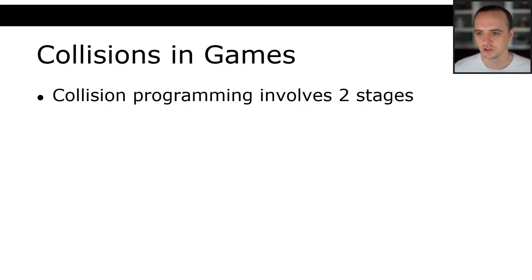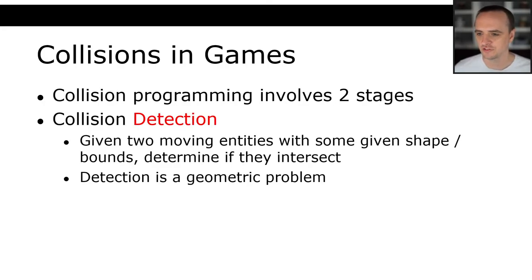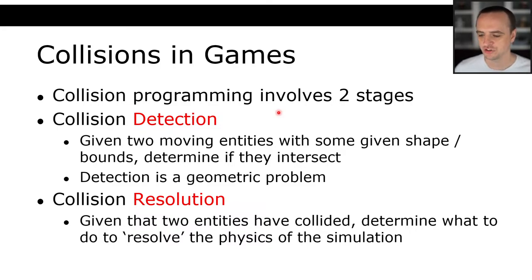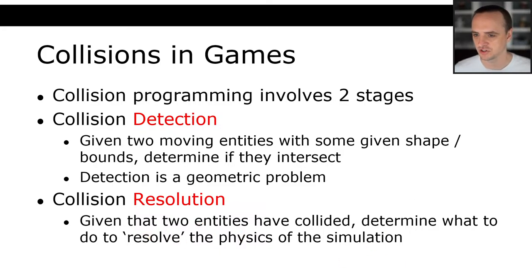There are two separate stages to collisions in games. The first step is collision detection. Given that we have two moving entities with some given shape or bounds and position, determine if they have collided — meaning determine if they're intersecting somehow. Detection is a geometric problem: we have two shapes and we're trying to determine whether or not those two things overlap.